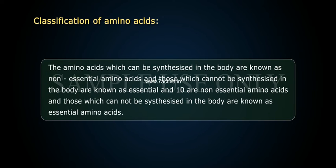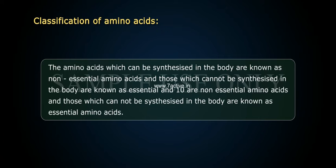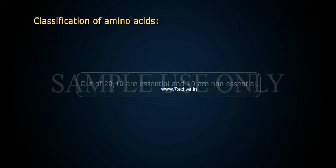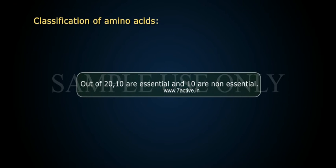Amino acids which can be synthesized in the body are known as non-essential amino acids, and those which cannot be synthesized in the body are known as essential amino acids. Out of 20 amino acids, 10 are essential and 10 are non-essential.